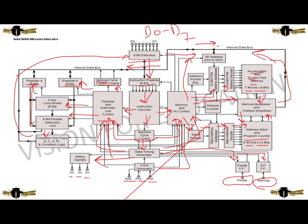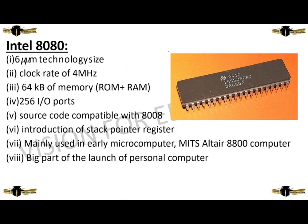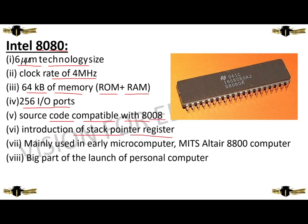The address stack and program counter process data back to the memory multiplexer and refresh amplifier, then back to the Intel data bus, and finally to the 8-bit data bus where the user gets the output. Now we are going to discuss about Intel 8080. Its technological size is 6 micro units. The clock rate is 4 megahertz. It has 64 kilobytes of memory consisting of ROM and RAM. It has 256 input and output portals, source code compatibility with 8008, and introduced the stack pointer register. It was mainly used in earlier computers and was a big part of the launch of personal computers.